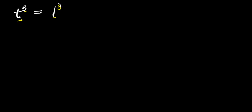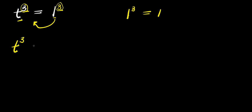Now, I can raise this 1 to the power of 3, because 1 to the power of 3 is the same thing as 1. And don't forget the fact that we have power 3 here, so we want this exponent to be the same. So from here, I can move this over here — I have t to the power of 3 minus 1 to the power of 3, and this equals 0.